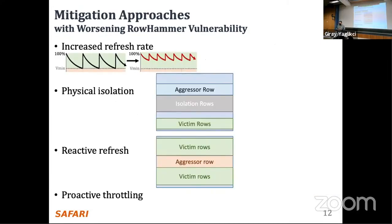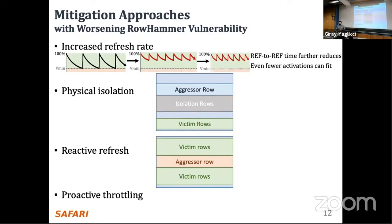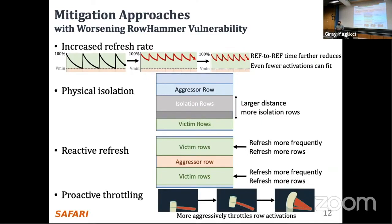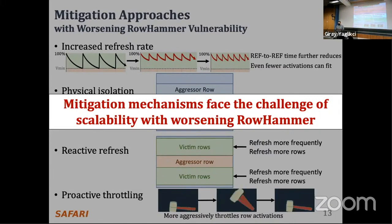To address worsening Rowhammer vulnerability: the increased refresh rate approach requires refreshing all rows more frequently and is not sustainable due to the large number of rows. Physical isolation requires allocating more isolation rows, which costs more DRAM capacity. Reactive refresh needs to refresh more potential victim rows more frequently. And proactive throttling needs to slow down the system further. We conclude that all these mitigation mechanisms face the scalability challenge.